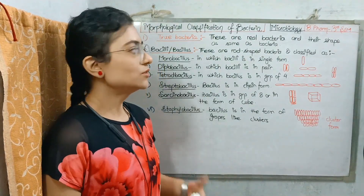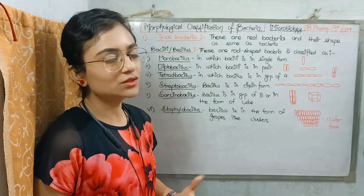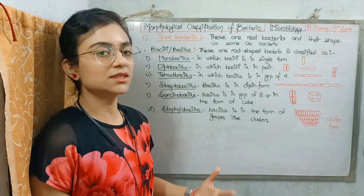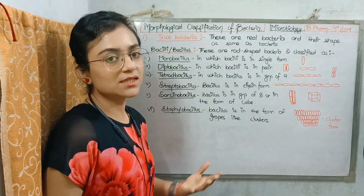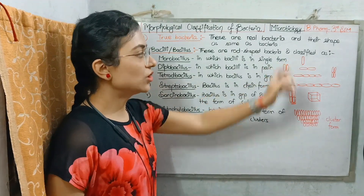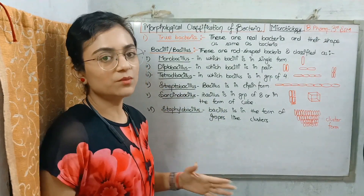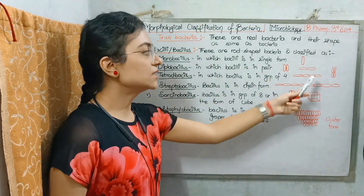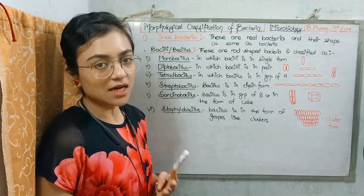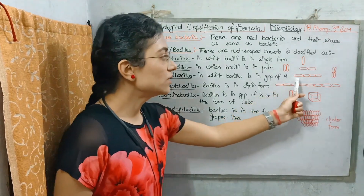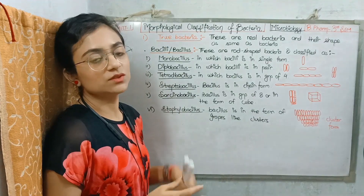If we talk about Bacillus, this is a true bacteria classification. The Bacillus is rod-shaped bacteria and is also classified into 6 types. First is Monobacillus — only one Bacillus, rod-shaped. Second is Diplobacillus — bacilli in a pair arrangement. Then there is Tetrabacillus — these are 4 groups linked together, either in a line form or other arrangements.